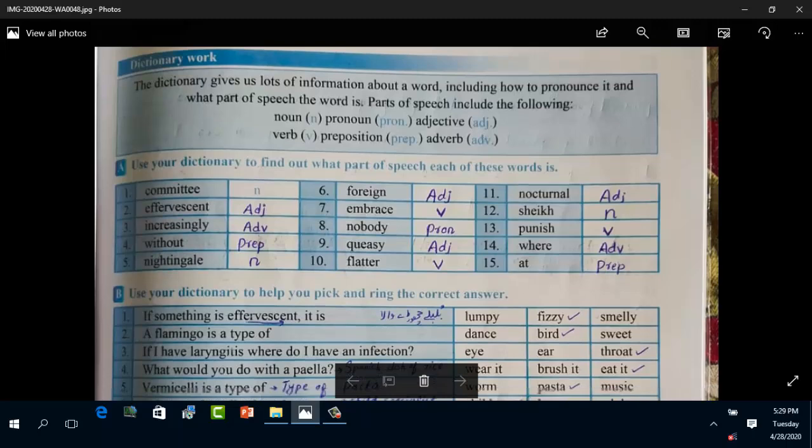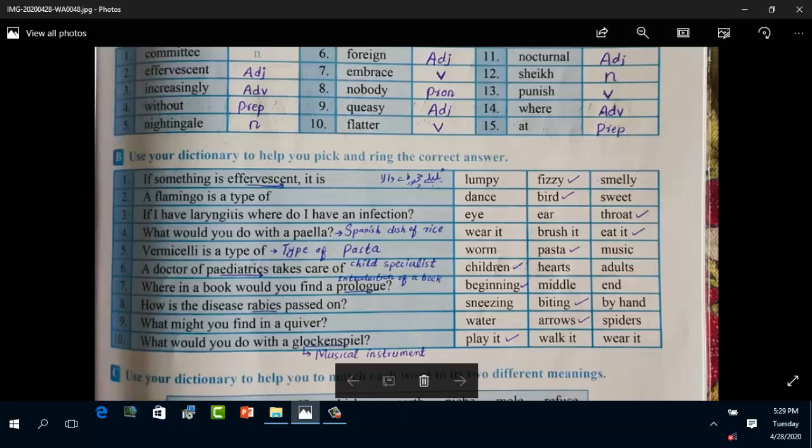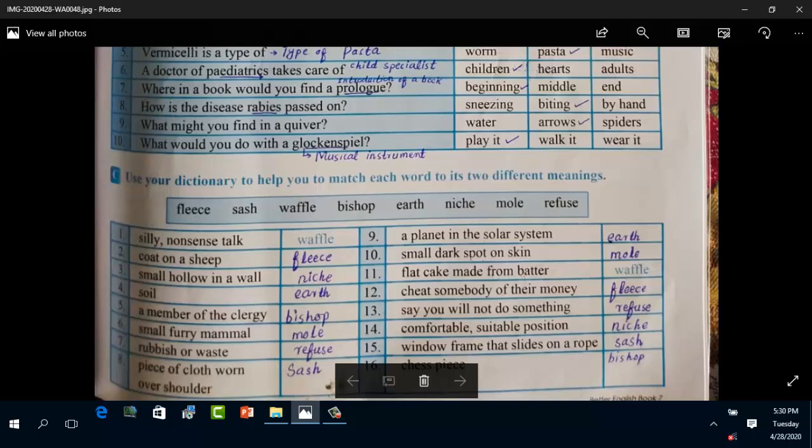Now coming to question B: use your dictionary to help you pick and ring the correct answer. If something is effervescent, it is fizzy. A flamingo is a type of bird. If I have laryngitis, where do I have an infection? Throat. What would you do with a paella? Eat it. Paella is actually a Spanish dish of rice. Vermicelli is a type of pasta. A doctor of pediatrics takes care of children. Where in a book would you find a prologue? In the beginning. How is the disease rabies passed on? Biting. What might you find in a quiver? Arrows. What would you do with a glockenspiel? Play it, it's a musical instrument.